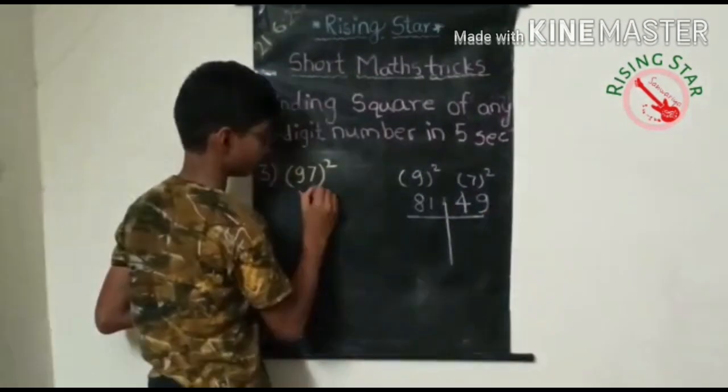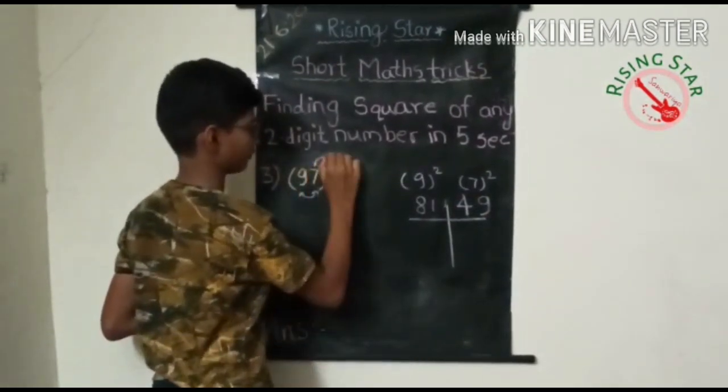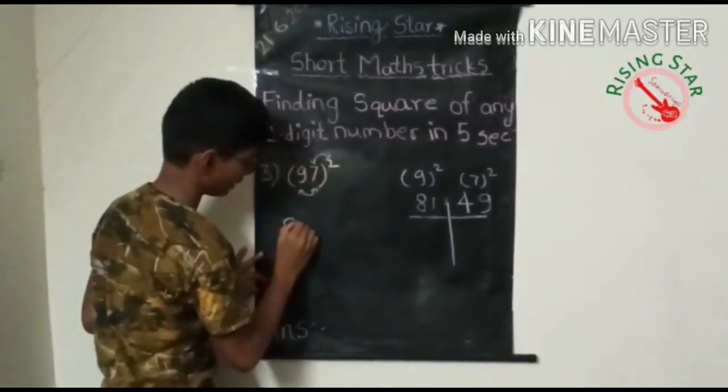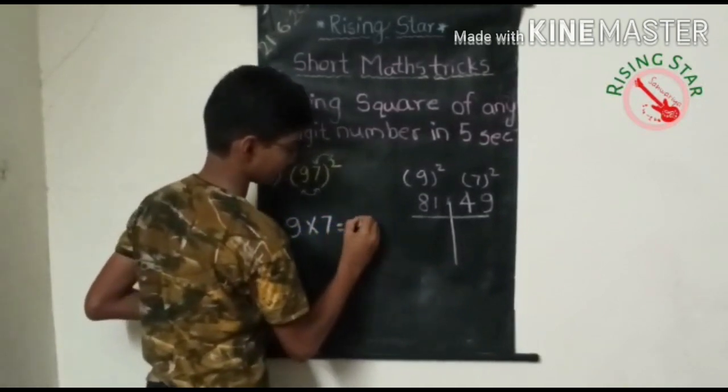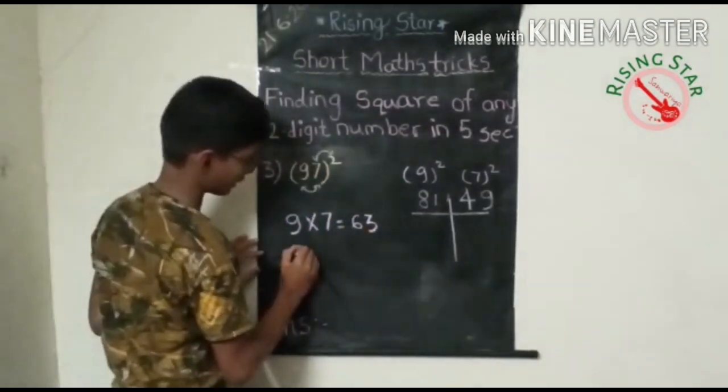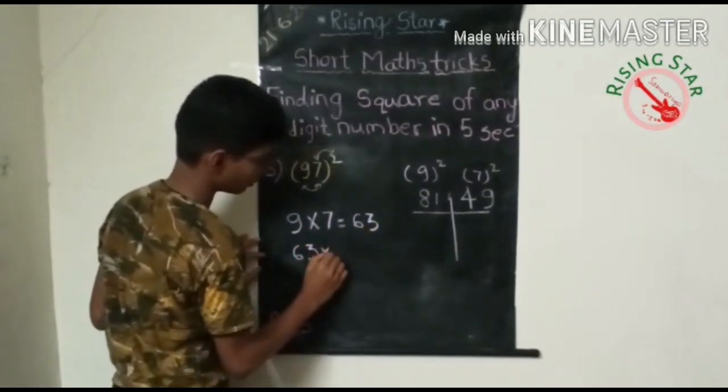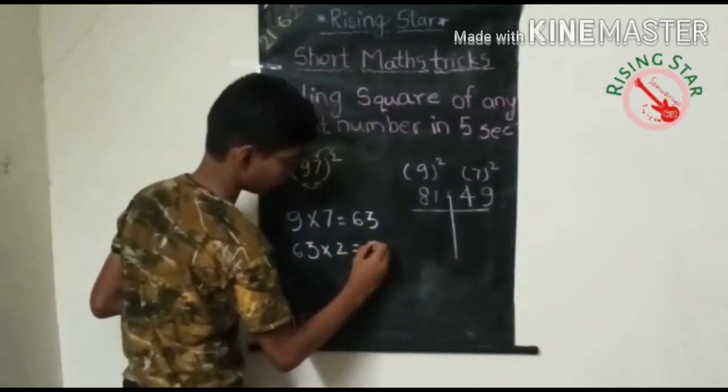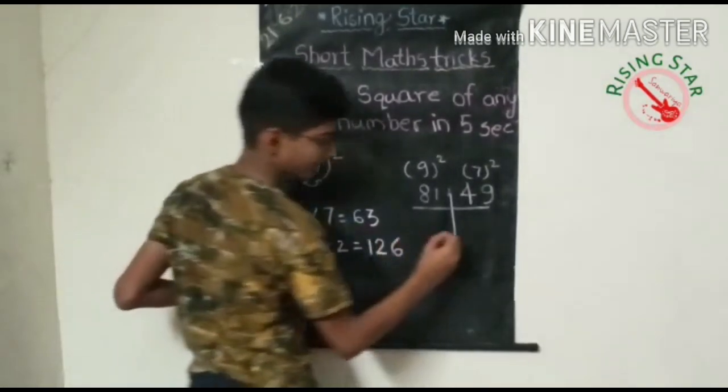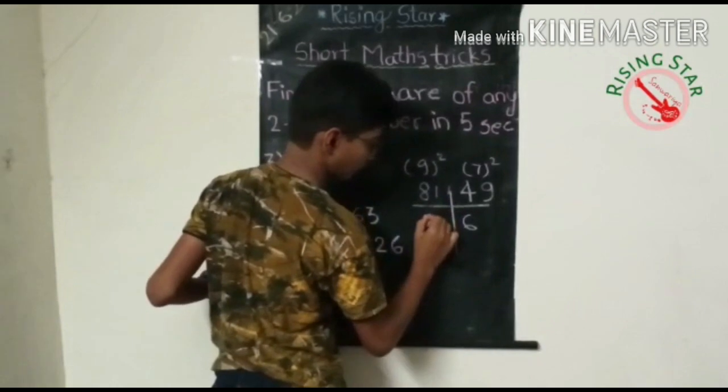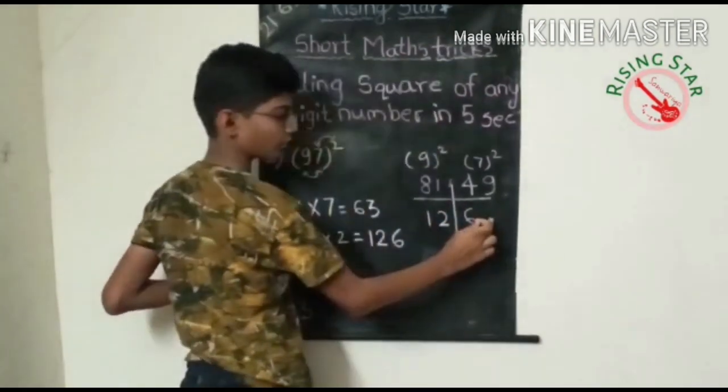And multiply nine into seven, which is equal to sixty-three. Sixty-three into two is equal to one hundred and twenty-six. So write six here and write one and two here. You have to remember to keep this place empty.